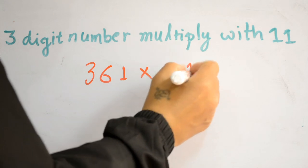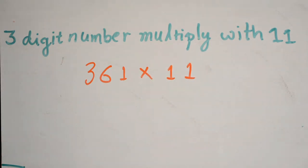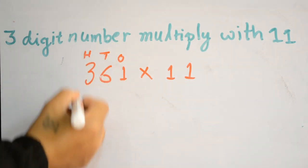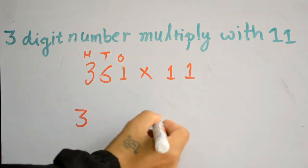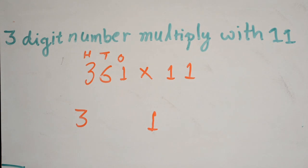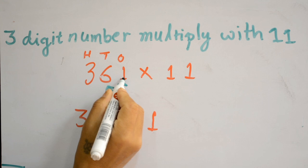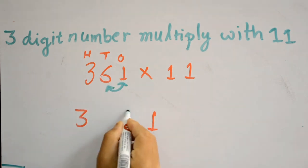361 is a three-digit number. We write the hundreds digit and ones digit first - 3 and 1. Next step, we add the ones and tens: 1 plus 6 is 7.